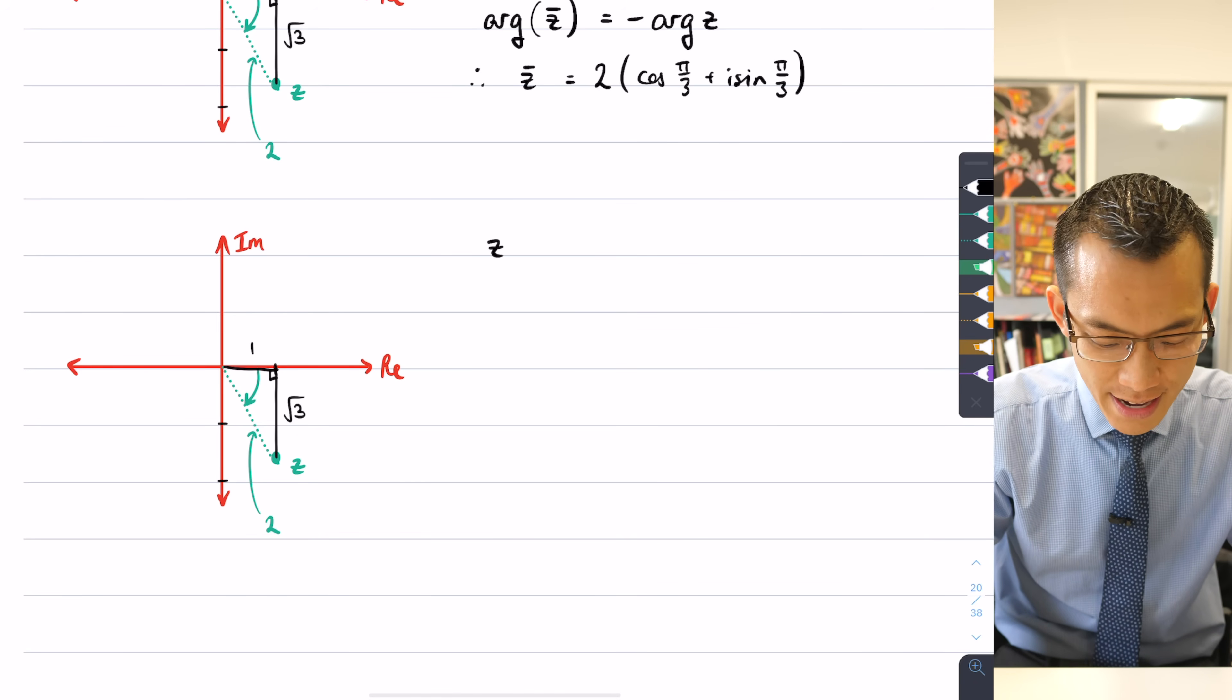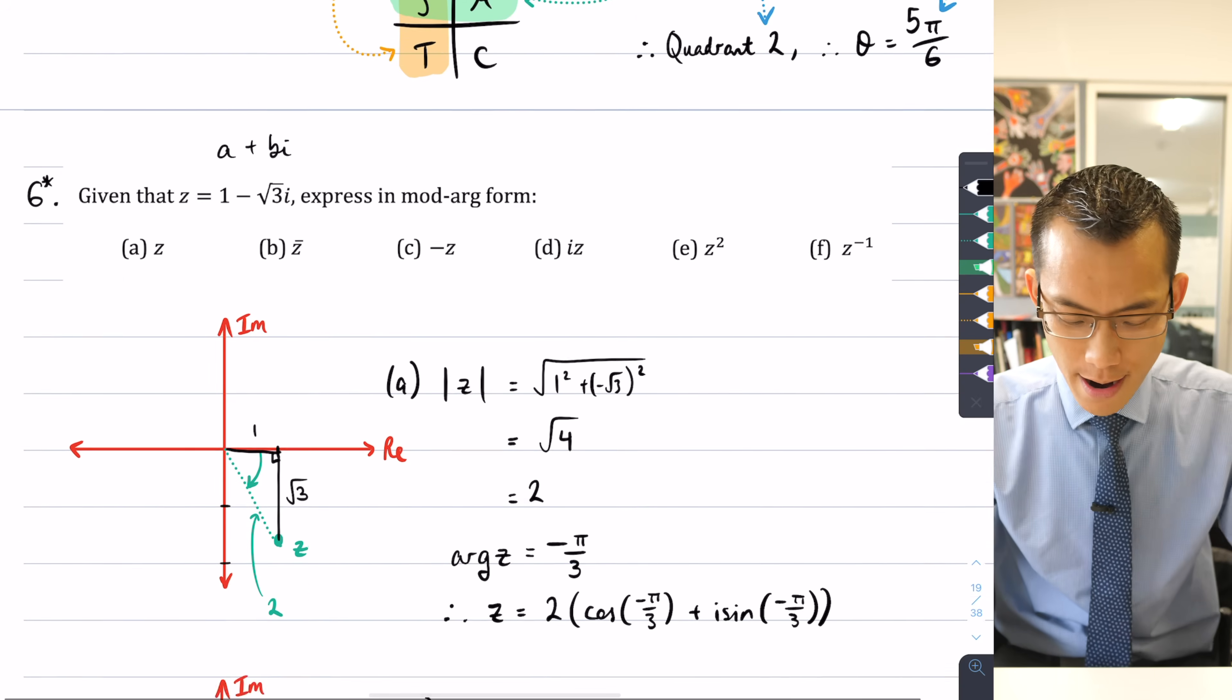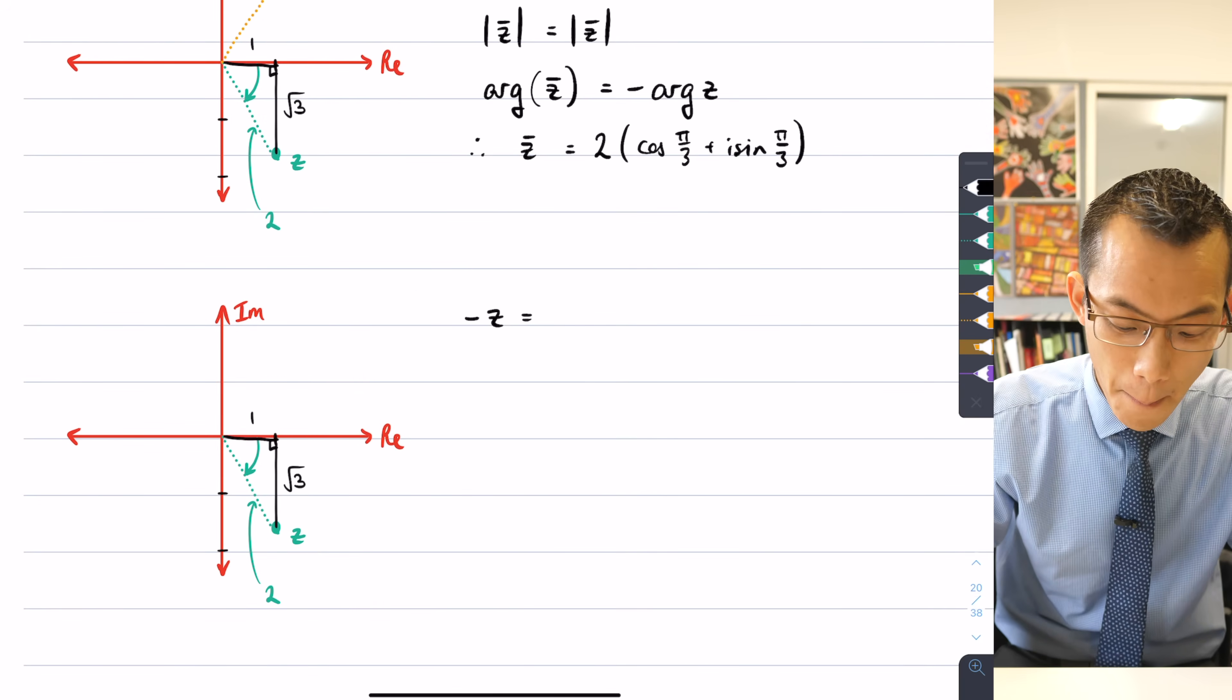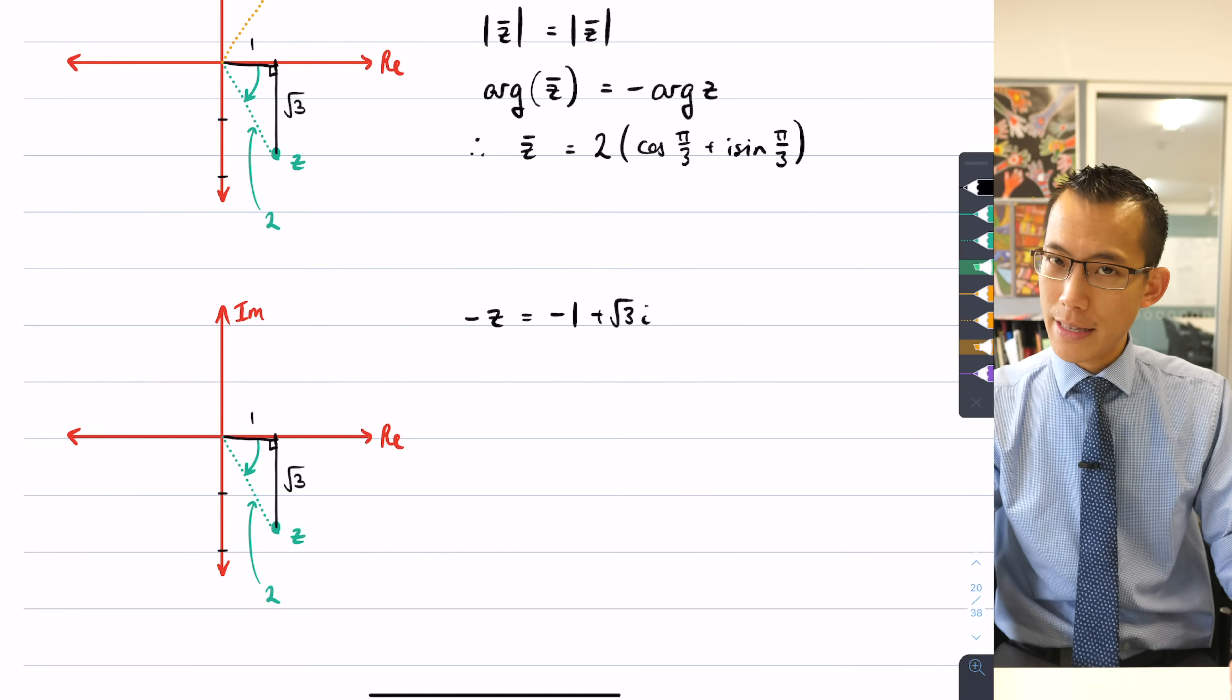Well, just like before, let's think about this just numerically first, and then we'll have a look at where that goes onto the diagram. So -z is going to be, if I just take 1 - √3i, and I'm going to apply a minus sign to the whole thing, so it's going to be -1 + √3i.